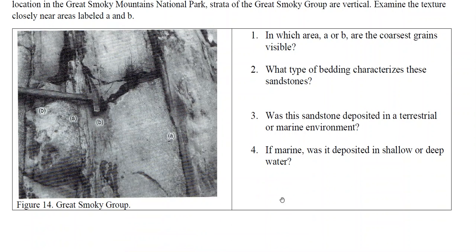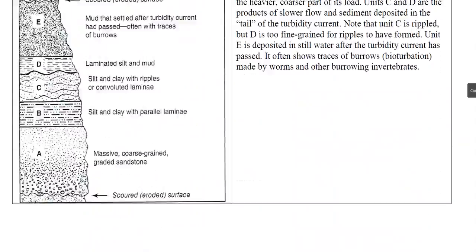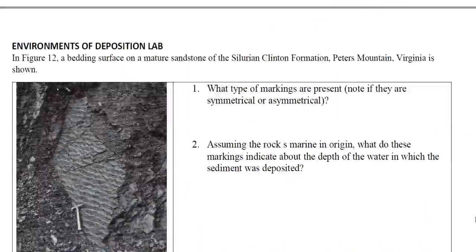For this last image, notice how the particles are coarser at the bottom and fine upward — try to figure that out. This probably should have been tied to Bouma sequences: this one looks like the 'A' division and that one is 'B', but I don't see the 'C' or 'D'. These are Bouma sequences depicted in this picture. Remember our image of Bouma sequences showing A and B divisions.